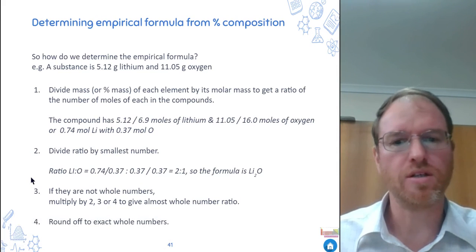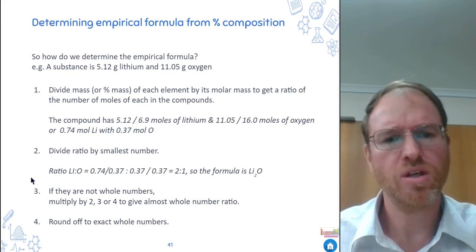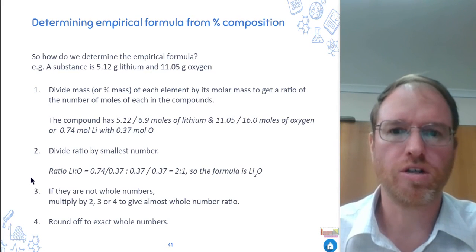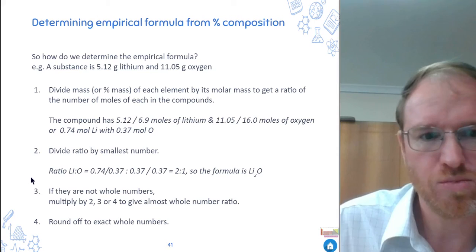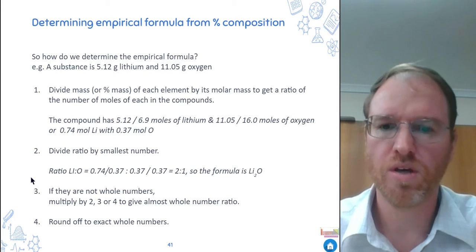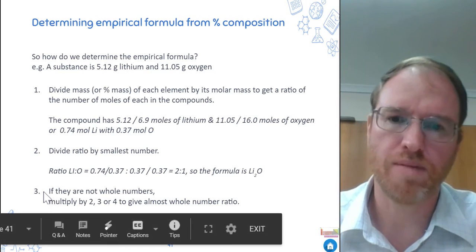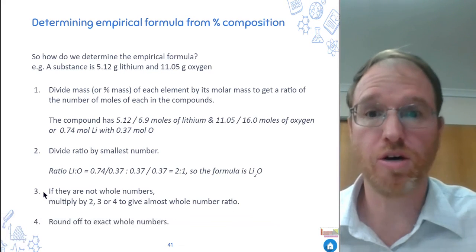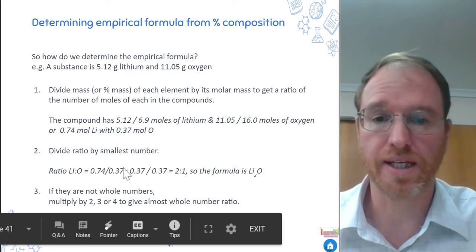So if you've got 2.03, well, you round that off to 2. That's just experimental error. If you've got 5.27, well, that's close to 5.25. So probably you've got to multiply it by 4. So often you'll need to do step 3 or step 4. So have a go at doing some percentage composition and some empirical formula calculations.